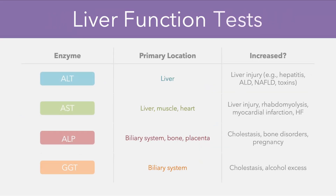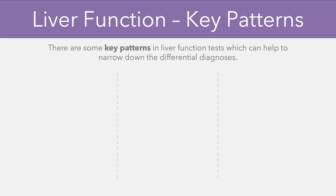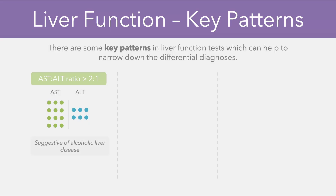Just to have all of the information in one place, we have a table here which shows the primary locations of each enzyme and what an increase in that enzyme level might indicate. There are also a few key patterns in liver function tests which are worth remembering, as they can help to narrow down the differential diagnoses. For example, if a patient has an AST to ALT ratio of greater than 2 to 1 — so the AST value is double the ALT value — it's highly suggestive of alcoholic liver disease.